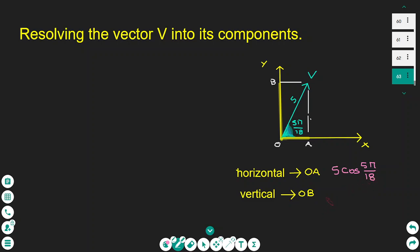And to find the vertical component, it's the magnitude of the vector times the sine of the angle, 5π/18.